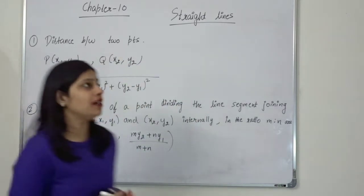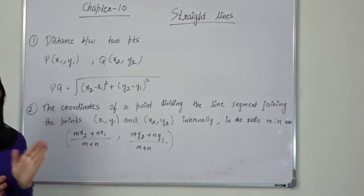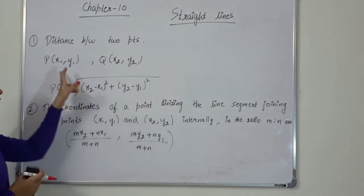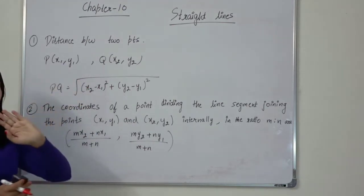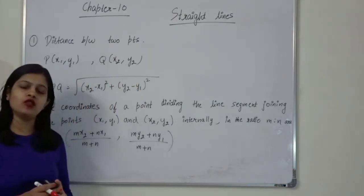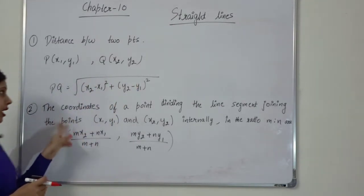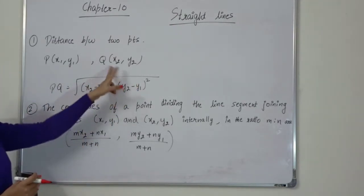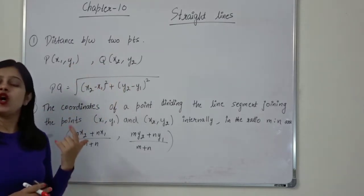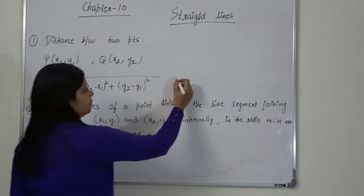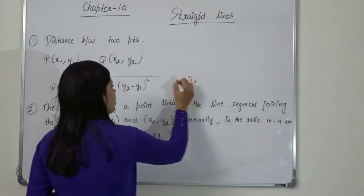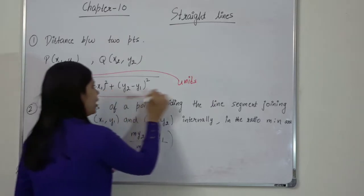First point: if we have two points P with coordinates (x1, y1) and Q with coordinates (x2, y2), how do we find the distance between the two points? It is the square root of (x2 minus x1) squared plus (y2 minus y1) squared. And then we add units — for example, 4 units.